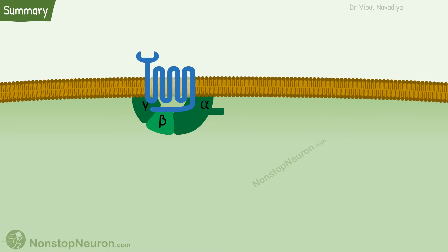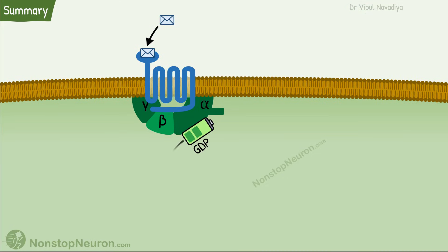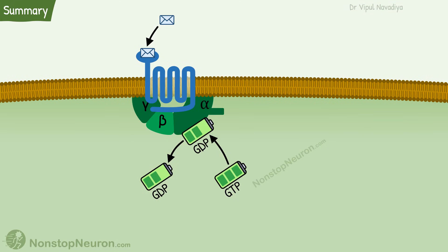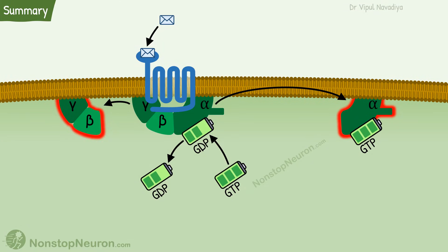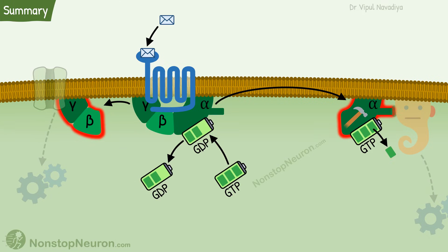Now the cycle of heterotrimeric G-protein subunits during signaling: in the resting state, the complex is associated with the receptor and the alpha subunit is bound to GDP. Binding of a ligand with the receptor causes release of GDP and binding of GTP, which causes release of the free alpha subunit and beta-gamma complex. Eventually, the GTPase activity of the alpha subunit causes hydrolysis of GTP into GDP and phosphate. This inactive alpha subunit then dissociates from the effector molecule and re-associates with the beta-gamma complex, bringing the system back to the resting condition.